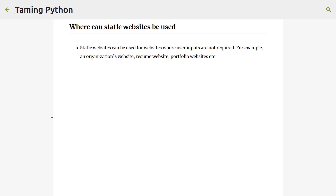Where can static websites be used? Static websites can be used for websites where user inputs are not required. For an organization's website, if it's all about showcasing the organization's details and no user input is required, they can just render HTML and JavaScript files to showcase the content. In the same way, if you have a resume or portfolio website, your application just needs to deliver the HTML content — that's all.